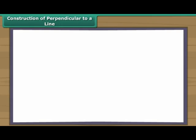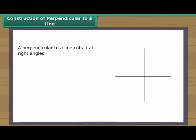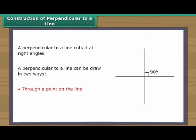Construction of perpendicular to a line. A perpendicular to a line cuts it at right angles. A perpendicular to a line can be drawn in two ways: through a point on the line, and through a point outside the line. Let us learn to construct perpendiculars in both ways.